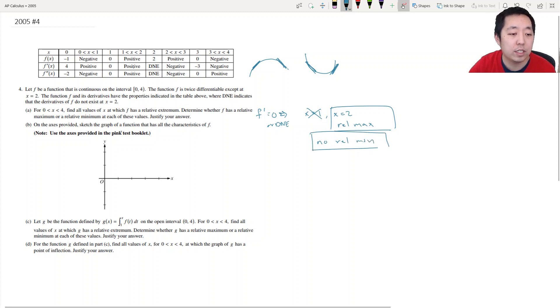On the axis provided sketch the graph of function that has all the characteristics of f. So f of 0 is negative 1, so I'm going to put that there. f of 1 is equal to 0. f of 2 is equal to 2. f of 3 is equal to 0.